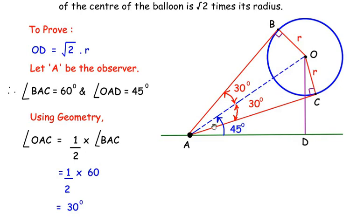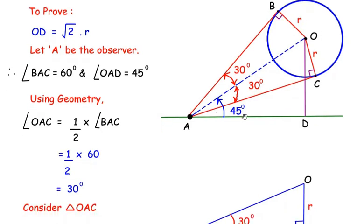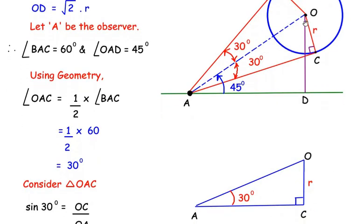Now let us focus on right-angle triangle OAC. Here OC equals r, angle C is 90 degrees, and angle OAC is 30 degrees. We want to find the length of OA, because OA is a common side for both triangle OAC and triangle ODA, and finding it will help us determine OD. With respect to the 30-degree angle, OC is the opposite side (equal to r) and OA is the hypotenuse. So we will use the sine trigonometric ratio.